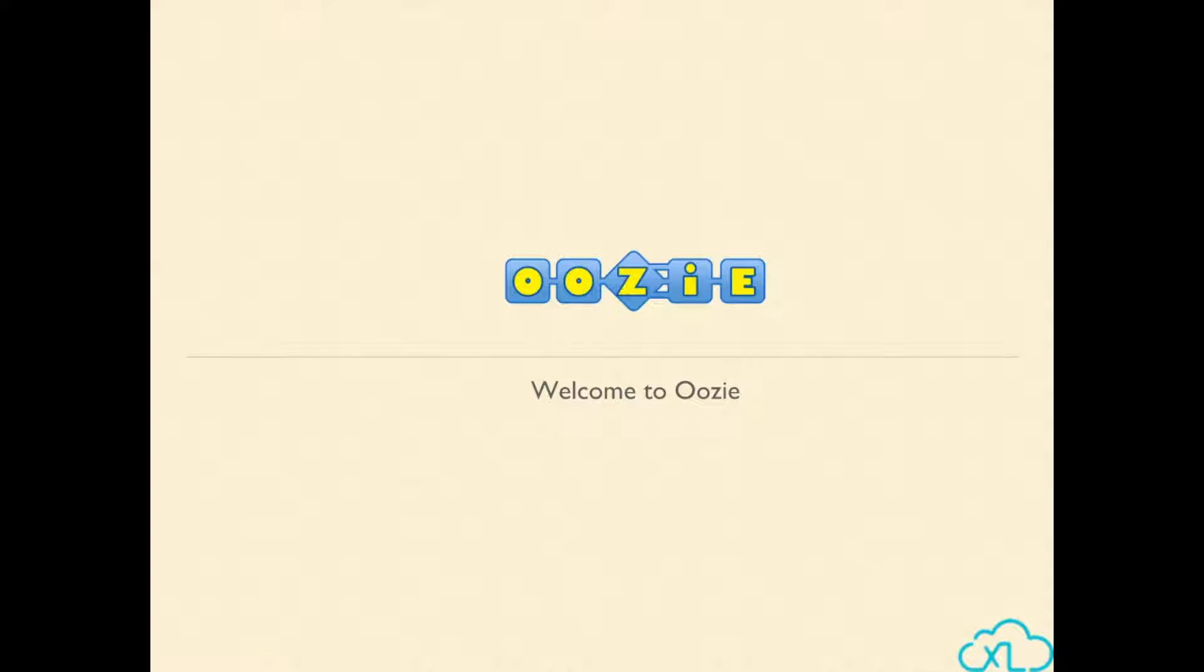In this video, we will learn about Oozie. Oozie is a Java application used for scheduling and executing Apache Hadoop jobs and workflows.